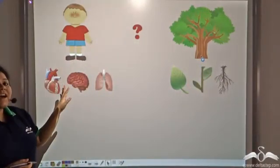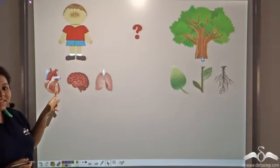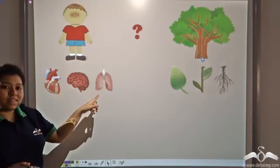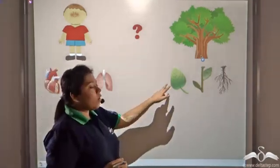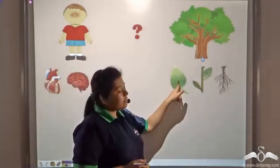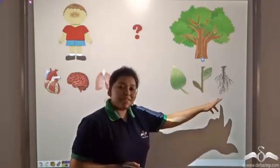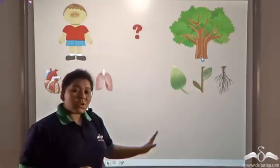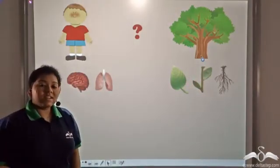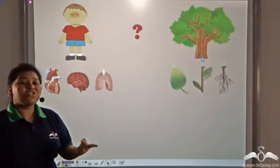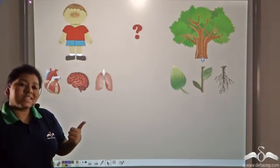Human beings have organs such as heart, brain, and lungs, and plants have organs such as the leaves, the stems and the roots. Now these organs are in turn made up of individual units known as cells.